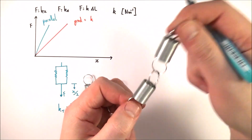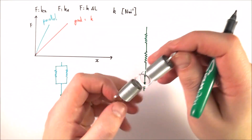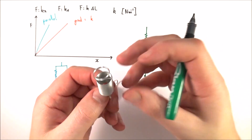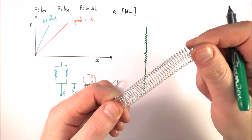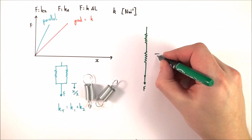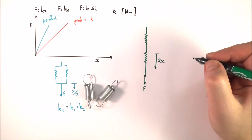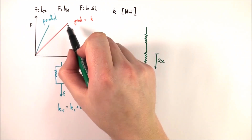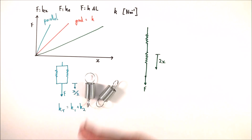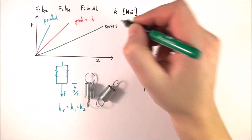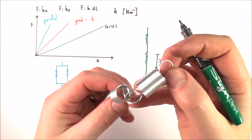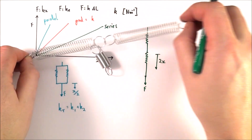What happens if you have springs joined end to end — a series arrangement? When you apply a force, you're applying it to the top spring and the bottom spring experiences the same force. Each spring extends by a value of x, so the total extension is equal to 2x. For the same force you get twice the extension that you would have had otherwise, giving a shallower gradient on the graph.